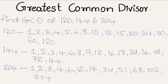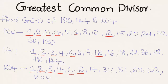Now let us mark the common factors of the given numbers. The common factors are 1, 2, 3, 4, 6, and 12. Note that 8 is not a common factor, but 12 is. There are no more common factors beyond 12.